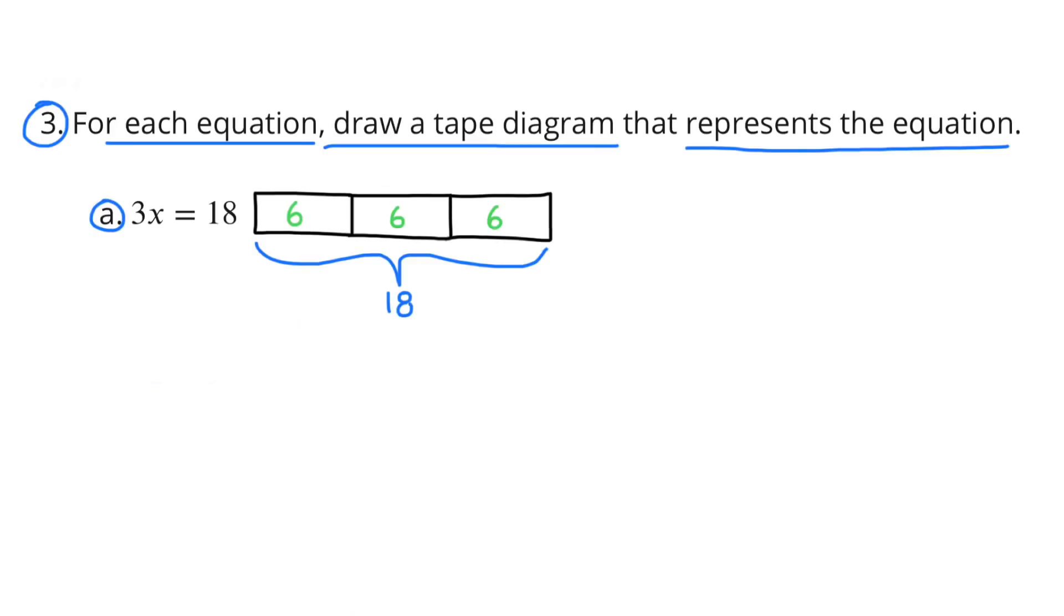Number 3: For each equation, draw a tape diagram that represents the equation. Problem A: 3x equals 18, or 3 times x equals 18. I drew my tape diagram, and I divided it up into 3 groups. It totals 18. You don't have to put the 6 on the inside of each one of the groups, but I did because I know that 3 times 6 equals 18.